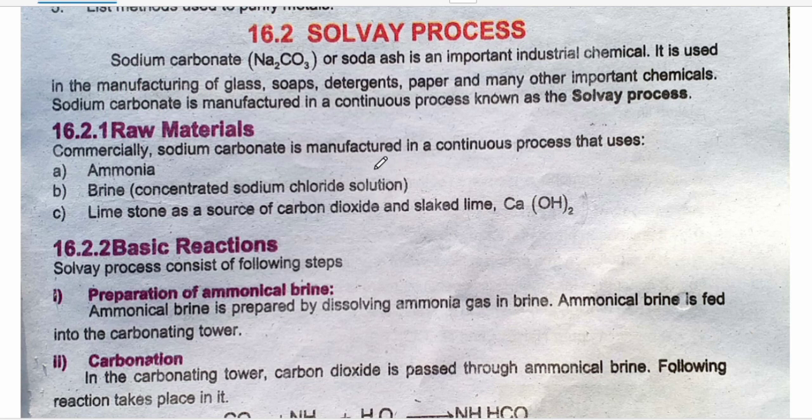Now let us begin with this topic. Sodium carbonate or soda ash is an important industrial chemical. It is used in the manufacturing of glass, soaps, detergents, paper, and many other important chemicals. Sodium carbonate is manufactured in a continuous process known as the Solvay process.